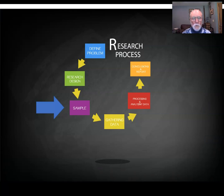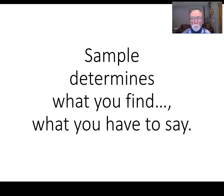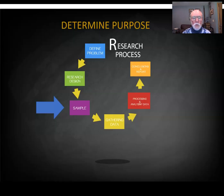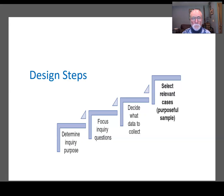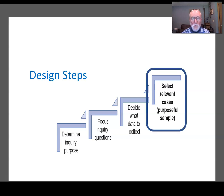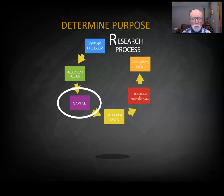In the traditional research process, we define the problem, do research design, and select the sample. Everything you have to say about something depends upon the sample — what you find, what you're going to communicate will ultimately come down to sample. When there are controversies about findings, it's often about the sample. What that traditional diagram leaves off is that before defining the problem you have to determine the purpose of the inquiry, and that purpose leads to the purpose for the sample, which is why we call it purposeful sampling. You determine the inquiry purpose, then focus the questions, then decide what data to collect and select the relevant cases — that's purposeful sampling, connecting the nature of the sample to the nature of the inquiry and its purpose.